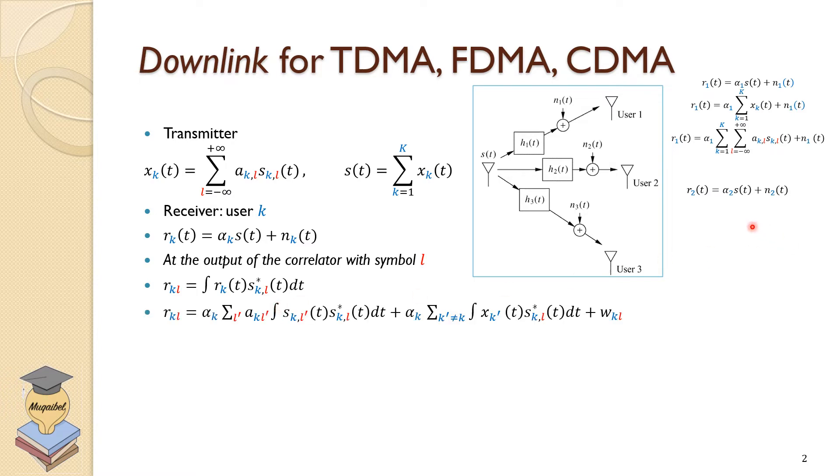If you open this up, if you multiply because of these double summations, we get different terms and the noise. At the output of the correlator, we'll get the filtered noise or the fixed noise. We'll split it into two parts when we have L and K are the same, and when they are not the same.